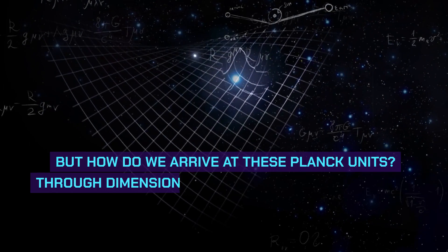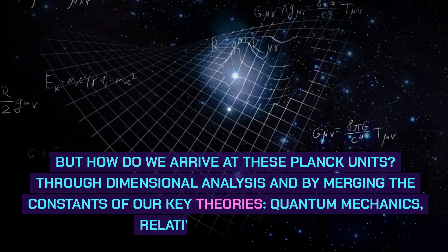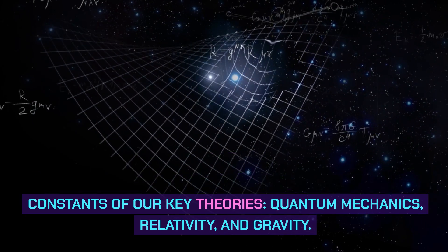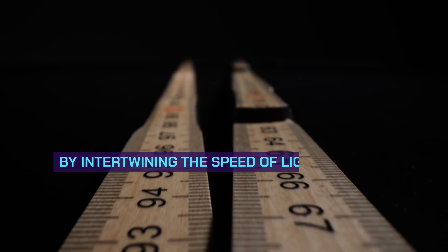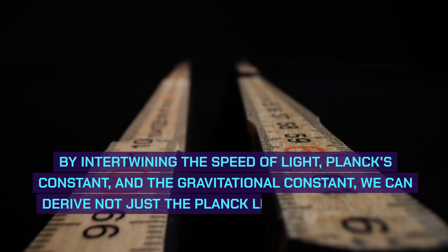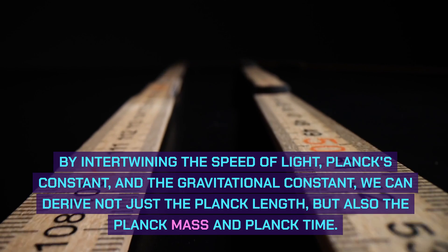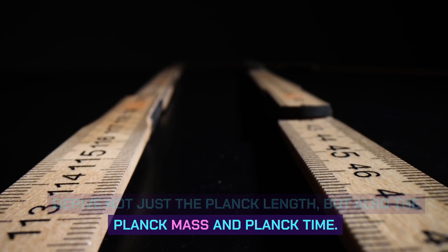But how do we arrive at these Planck units? Through dimensional analysis and by merging the constants of our key theories: quantum mechanics, relativity, and gravity. By intertwining the speed of light, Planck's constant, and the gravitational constant, we can derive not just the Planck length, but also the Planck mass and Planck time.